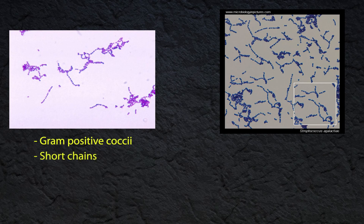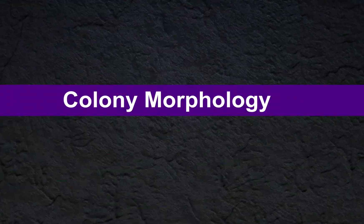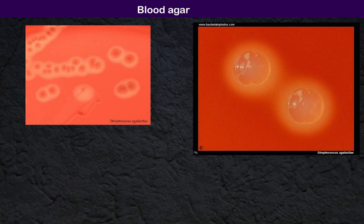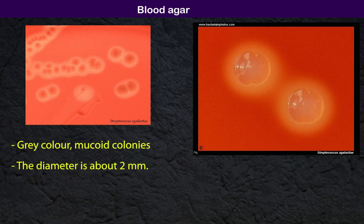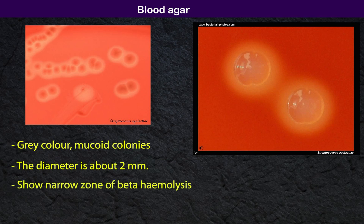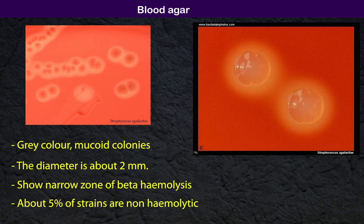In laboratory diagnosis, S. agalactiae appears as gram-positive cocci in gram stain slides, usually seen as short chains. The organisms are non-motile and most are capsulated. On blood agar, most strains of S. agalactiae produce gray, mucoid colonies with a diameter above 2 millimeters, showing a narrow zone of beta hemolysis. About 5% of strains are non-hemolytic.